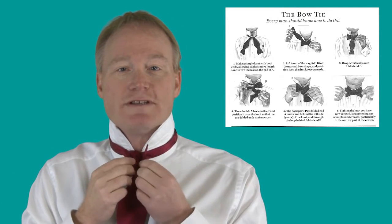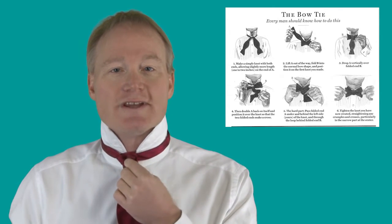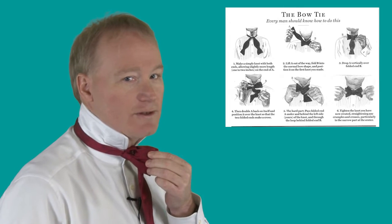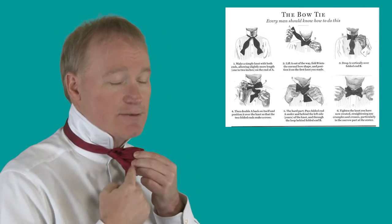Step three is you take your two ends of your bow, and you bring them together. So you're going to hold it just like that, and you're going to take this and just give it a little tightening. So that's step three.